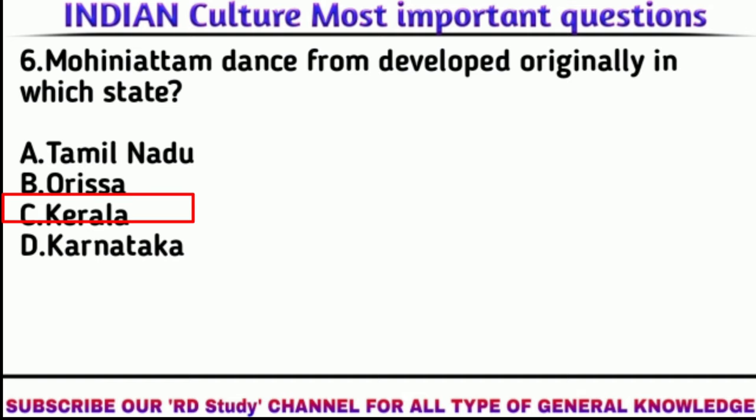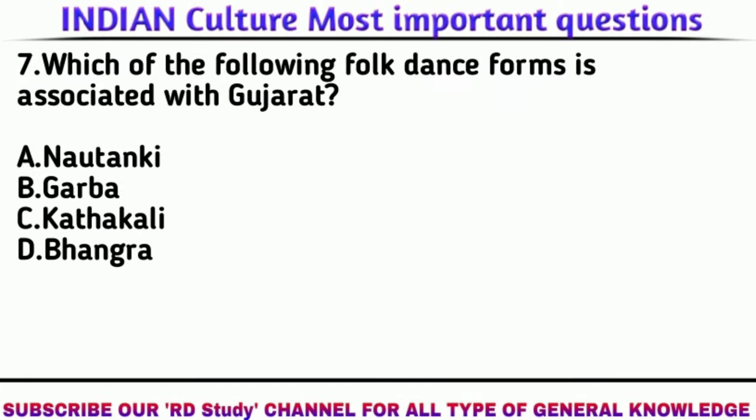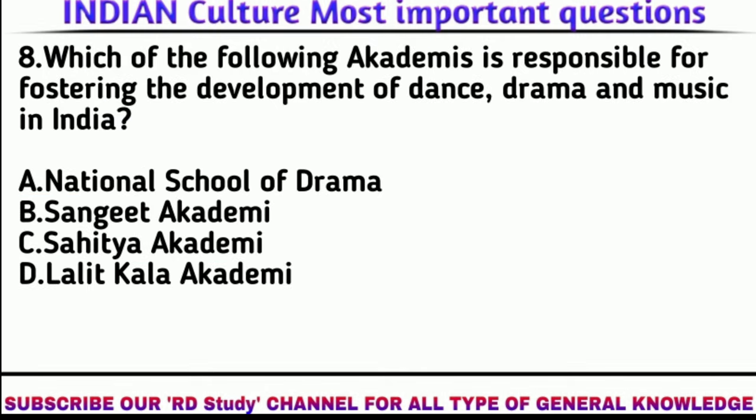Answer: Kerala. Question 7: Which of the following folk dance forms is associated with Gujarat? Answer: Garba. Question 8: Which of the following academies is responsible for fostering the development of dance, drama, and music of India?